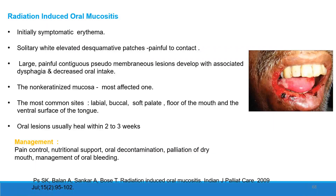Radiation-induced oral mucositis. Initial symptoms include symptomatic erythema. Solitary, wide, elevated, whitish patches can be seen that are painful to contact. Large painful contiguous pseudomembranous lesions develop with dysphagia and decreased oral intake. Non-keratinized mucosa is most affected. The most common sites are labial-buccal mucosa, soft palate, floor of the mouth, and ventral surface of the tongue. The oral region usually heals within two to three weeks. Management includes pain control, nutritional support, oral decontamination, palliation of dry mouth, and management of oral bleeding.